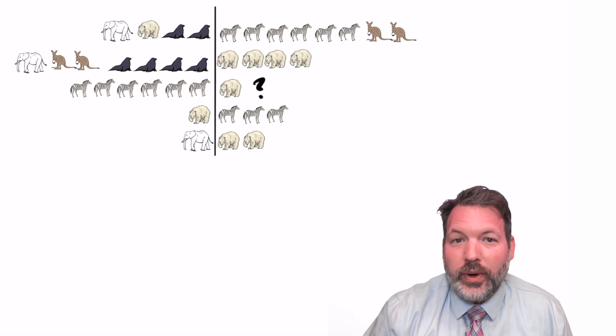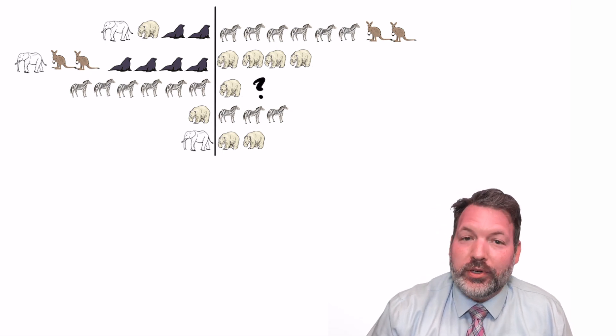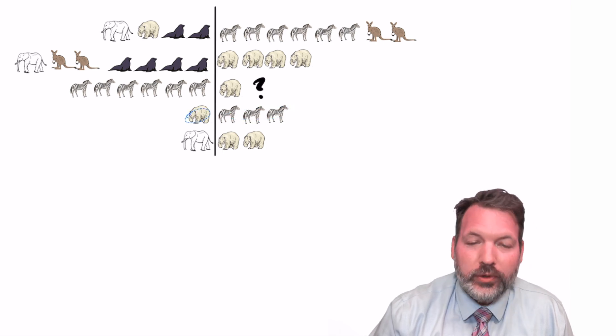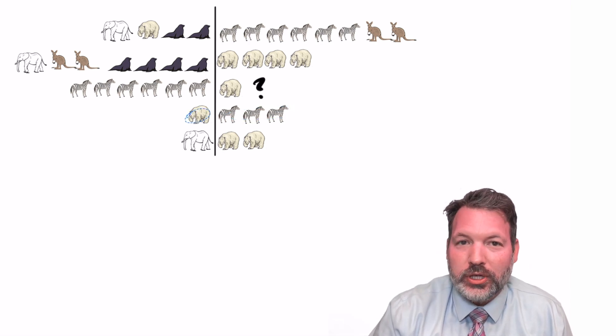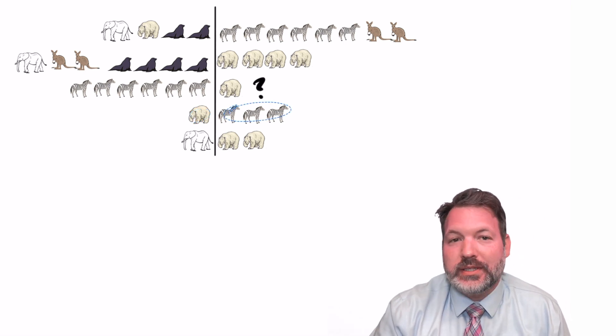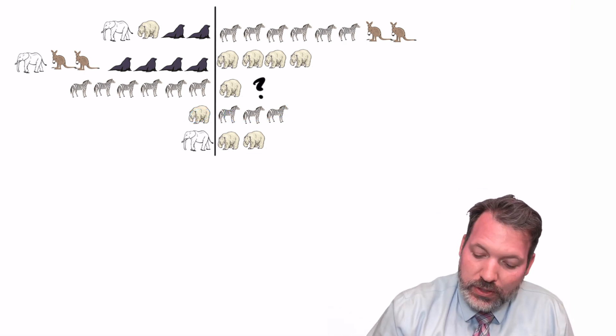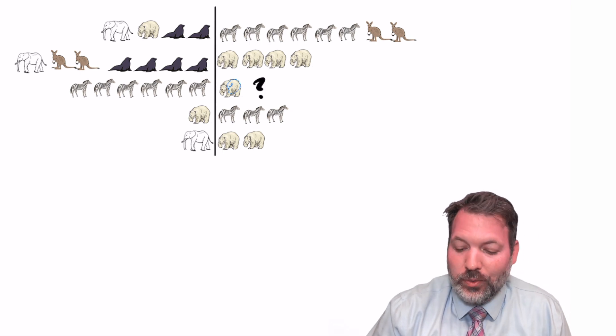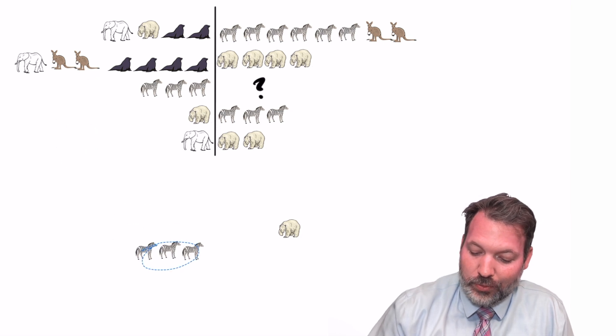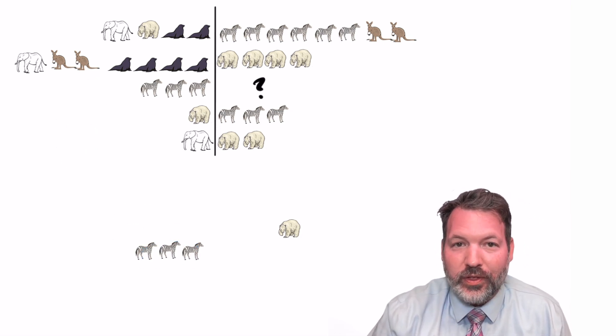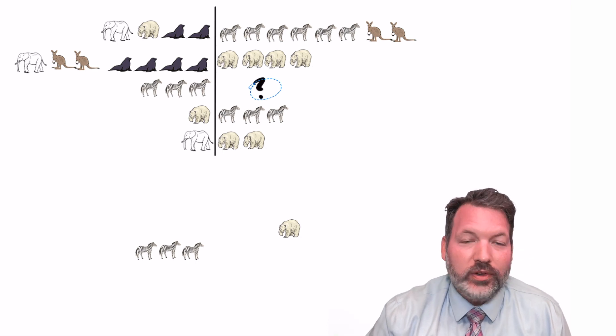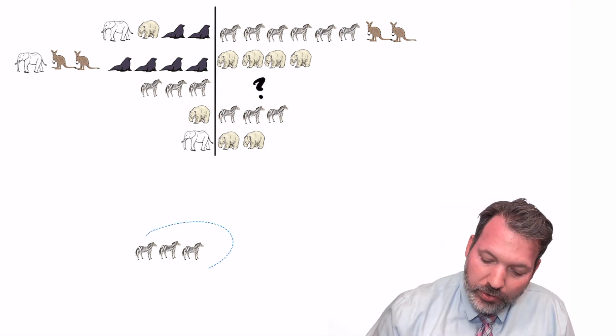I want to approach this the way that basically a 10 or 11-year-old might approach it. For example, your average 10 or 11-year-old might notice off the bat, hey, a polar bear already has a relationship with some number of zebras. Specifically, a polar bear is the same thing as three zebras. So another way to think about this question is we can actually get rid of a polar bear from the right side of that third deck and get rid of three zebras from the left side of the third deck.